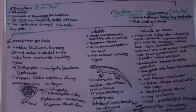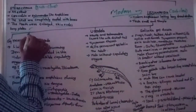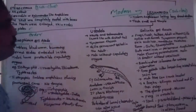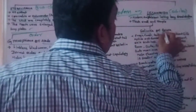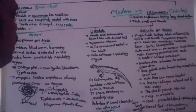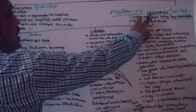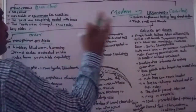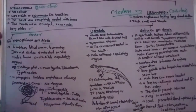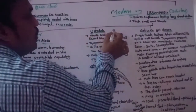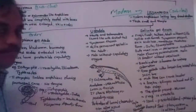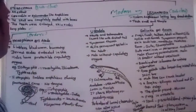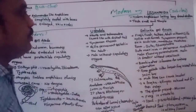In Lissamphibia, only the upper jaw has teeth. Lissamphibia is classified into three orders: Gymnophiona (Apoda), Urodela, and Salentia (Anura).